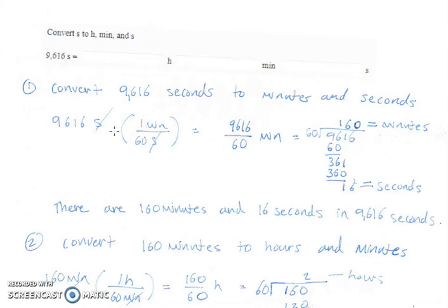We have an original measurement of 9,616 seconds. We're going to multiply by a conversion factor for converting seconds to minutes. We set it up so that the second units will cancel.